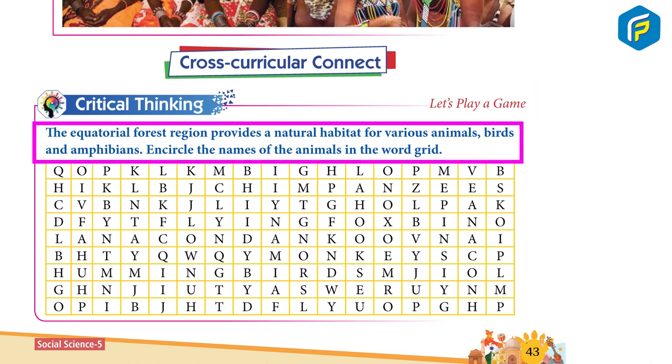The Equatorial Forest Region provides a natural habitat for various animals, birds, and amphibians. Circle the names of the animals in the word grid.